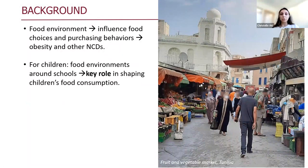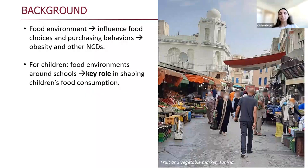For children, the food environment around schools can play a key role in shaping children's food consumption, because children encounter many food exposures on their daily trajectory to and from schools, and they are more autonomous in their food choices there.